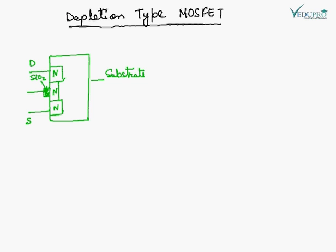This is the basic construction of depletion type MOSFET. Here there is one terminal, this is drain, this is source, and this is an insulator of silicon dioxide and this is the gate.